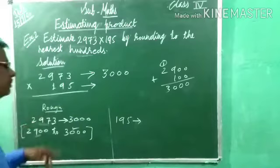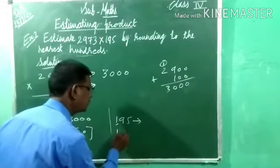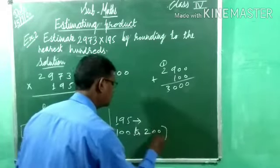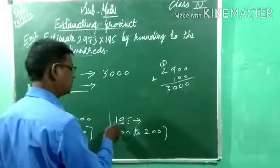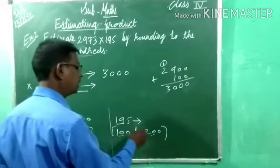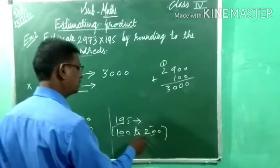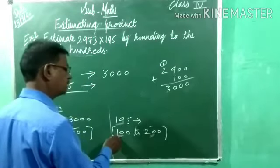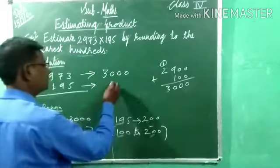Now 195. What is the place value of 100? 1 times 100. So 1 and place 2 zeros giving 100, then 100 plus 100 equals 200. Now 19 — 19 gets nearest to 20 only. Or looking at the full number, 195 gets nearest to 100 or 200 — it gets nearest to 200. So write 200 here.